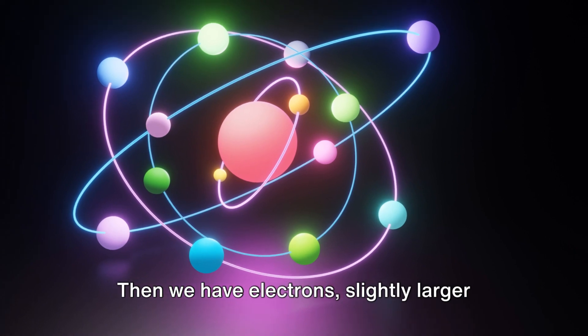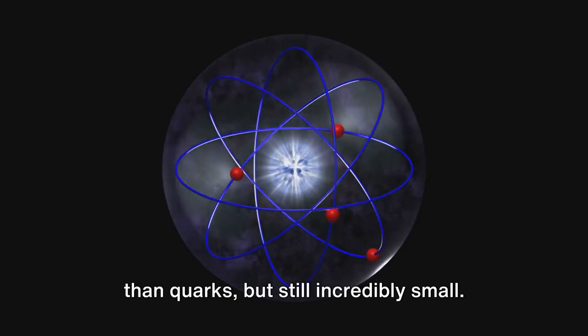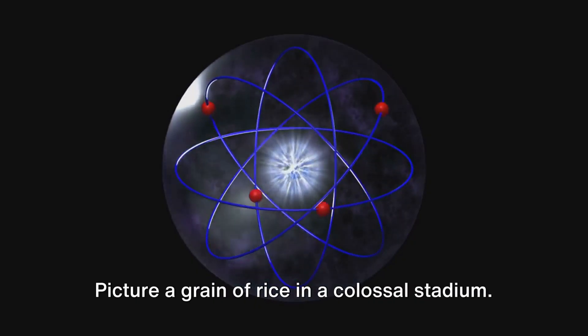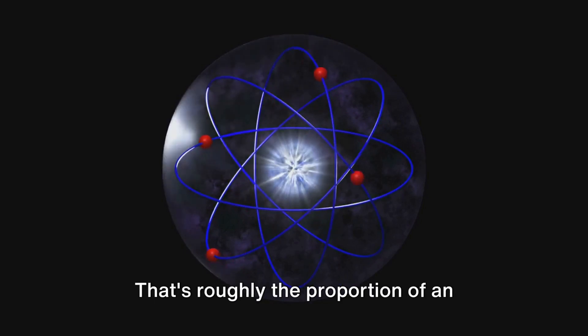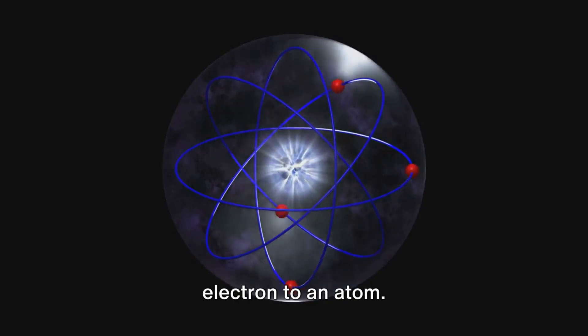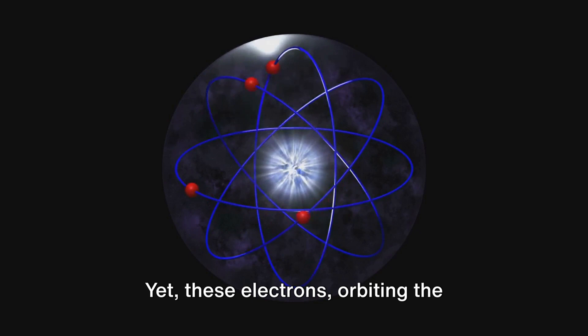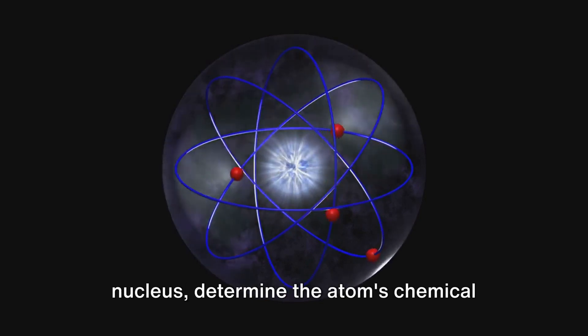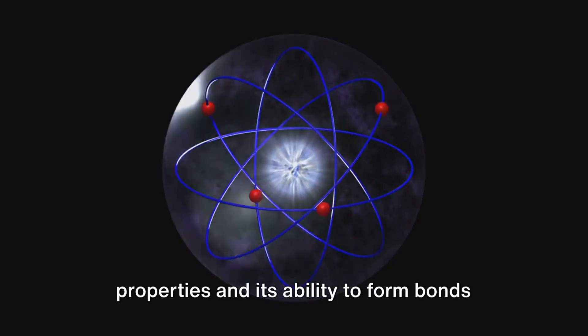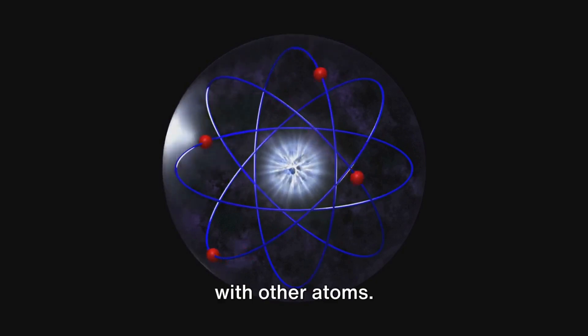Then we have electrons, slightly larger than quarks, but still incredibly small. Picture a grain of rice in a colossal stadium. That's roughly the proportion of an electron to an atom. Yet, these electrons orbiting the nucleus determine the atom's chemical properties and its ability to form bonds with other atoms.